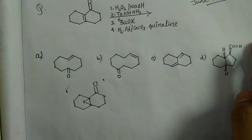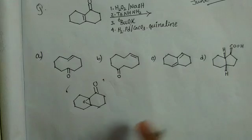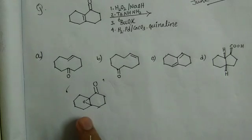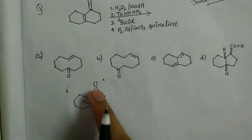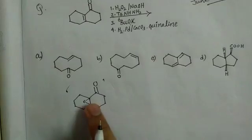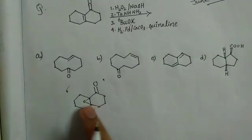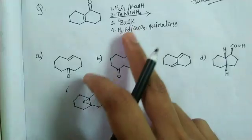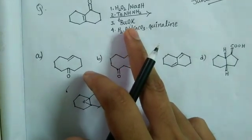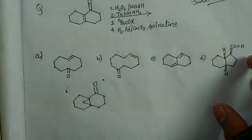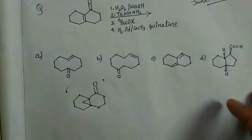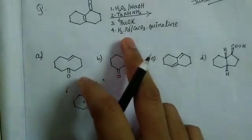If you remember the Eschenmoser fragmentation: if you treat a compound where you have a carbonyl group and an adjacent epoxide at the alpha position, and treat it with tosyl hydrazine and potassium tert-butoxide, it will result in the Eschenmoser fragmentation. The fourth reaction step is catalytic hydrogenation.